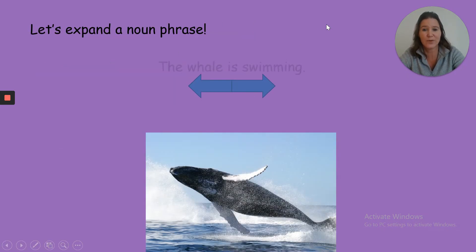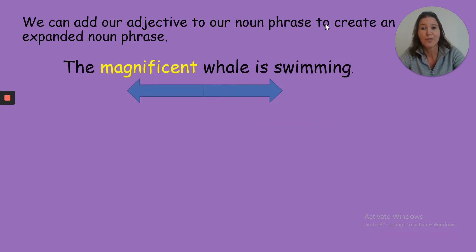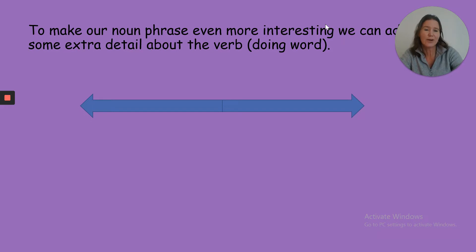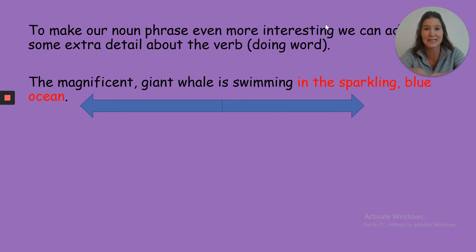We're going to expand this very simple noun phrase: the whale is swimming. We need to think of an adjective to describe the whale. Personally, I think that whale is magnificent, and it's a giant of the ocean. So, the magnificent whale is swimming. We can add more adjectives to expand our noun phrase further — the magnificent giant whale. Now I've got two adjectives describing my whale, so I've expanded that noun phrase.